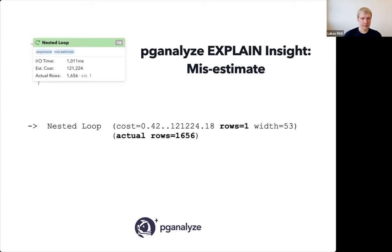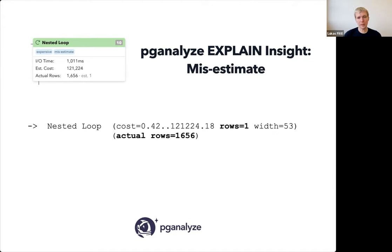If you're wondering how to find out if misestimation is a problem, you can literally look at the numbers in EXPLAIN ANALYZE. Here you can see rows=1 but actual rows is actually 1600. If you're using pganalyze, we actually highlight this as an explain insight — when you look at an explain plan in pganalyze, you'll see a 'misestimate' tag annotating that Postgres thought it would be 1 row but it was actually 1600.